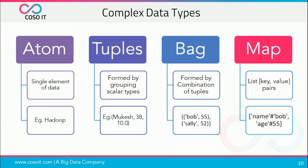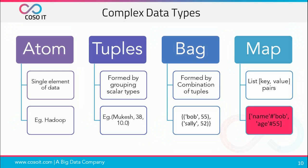A map is a set of key-value pairs. For example, a map with two keys — name and age — where the first value is a char array and the second is an integer. All of these complex types can contain data of any type, including other complex types.